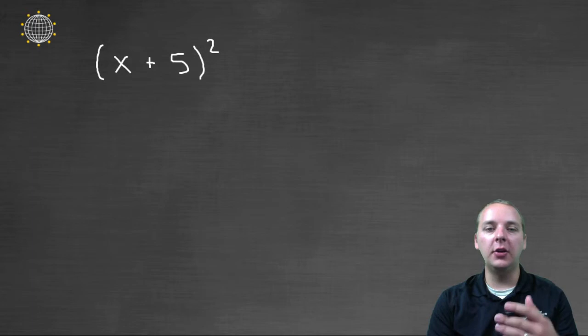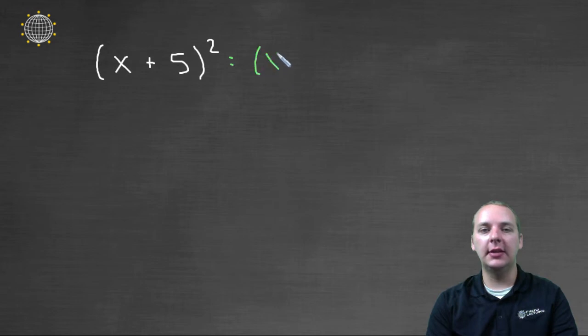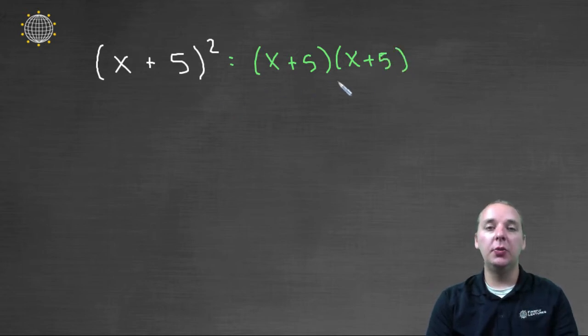Well, think about just the fundamental definition of squaring something. When you square something, that means you take it, in this case x plus five, and you multiply it by itself a total of two times. That's what it means to square something. And so when you write it like this, it makes perfectly good sense.